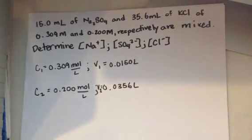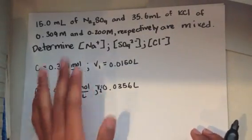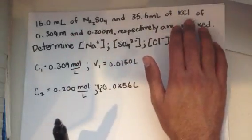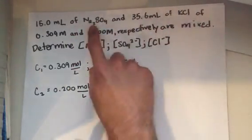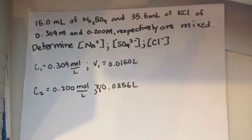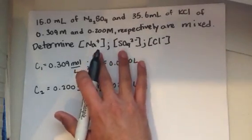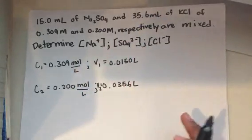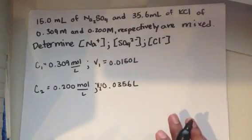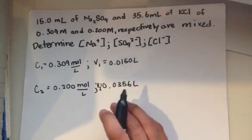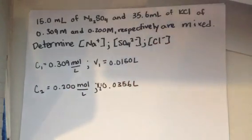Since none of the ions are present in both solutions — sodium is not in solution 2, sulfate is not in solution 2, potassium is not in solution 1, and chloride is not in solution 1 — we can treat this question as if it were three separate dilutions. The first step is to write out the dissociation equations for each solution and determine the number of moles of each ion of interest.